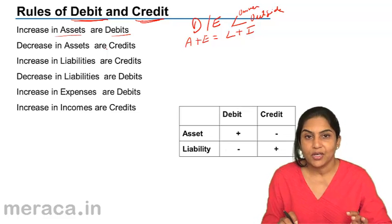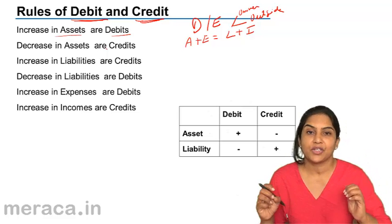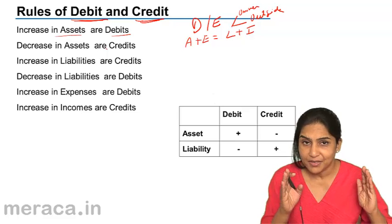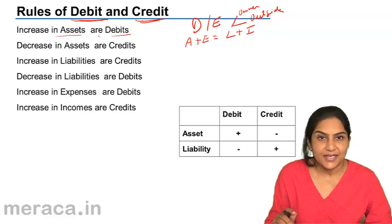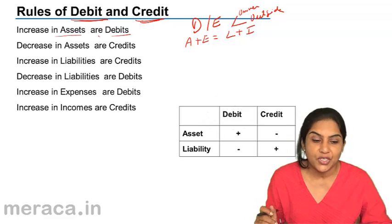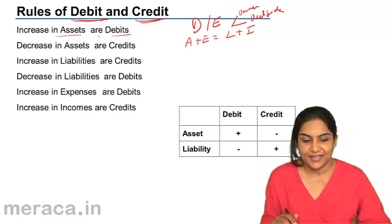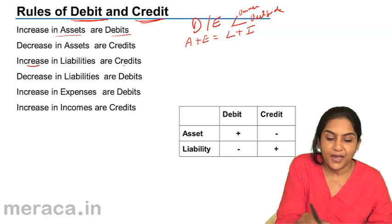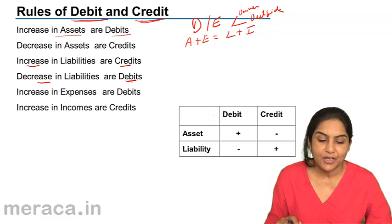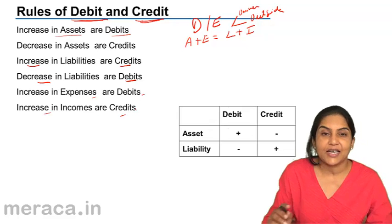What do we mean by an account? Each item — whether it is cash, a debtor, a creditor, furniture, sales, or purchases — is represented by an account. Increase in assets are debits; decrease in assets are credits. The rule is the opposite for liabilities and incomes: increase in liabilities are credits, decrease in liabilities are debits. Whatever happens to assets also happens to expenses, so increase in expenses are debits. Whatever happens to liabilities also happens to income, so increase in incomes are credits.